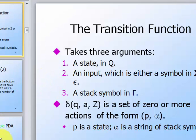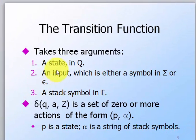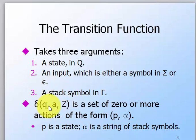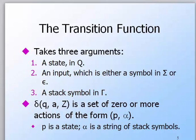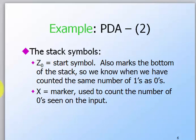The transition function takes three arguments: a state (probably the start state), an input, and a stack symbol. Before, in NFA or DFA, you just had the transition state and the input. But this time you have an extra parameter, which is the stack symbol.